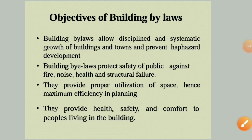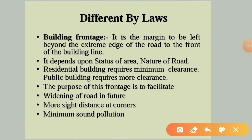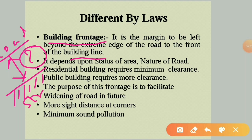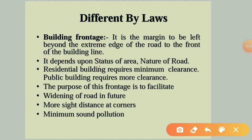Now we look at the different types of building bylaws and the areas where they are proposed. First is building frontage — the main margin to be left beyond the extreme edge of the road to the front of the building. The space between the road and the front of the building is what we call building frontage.